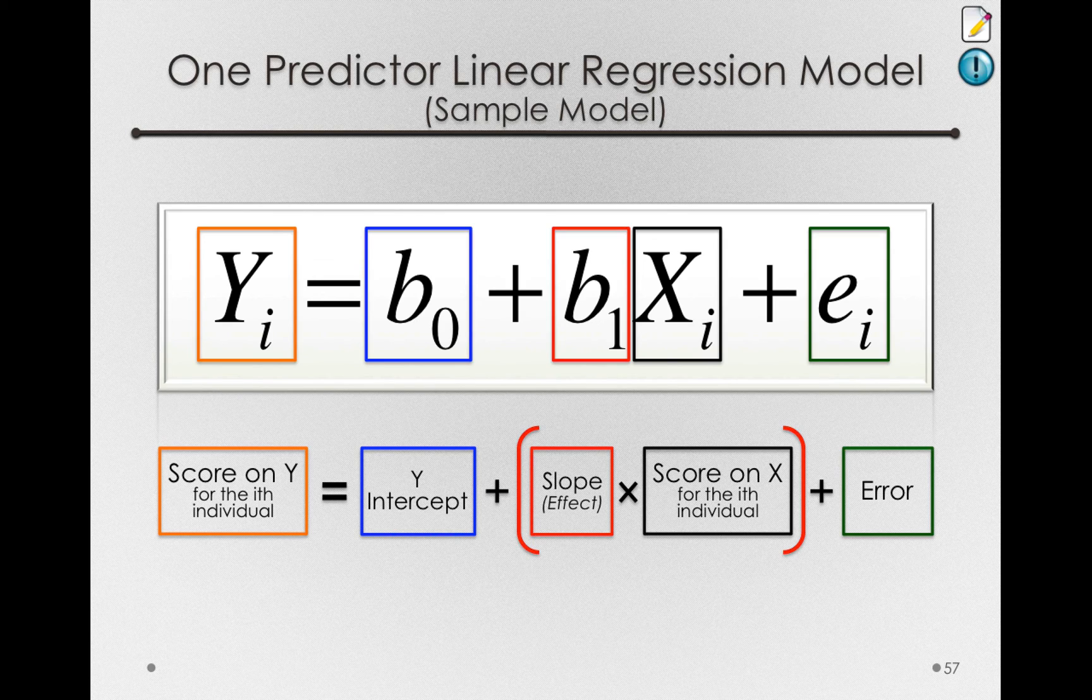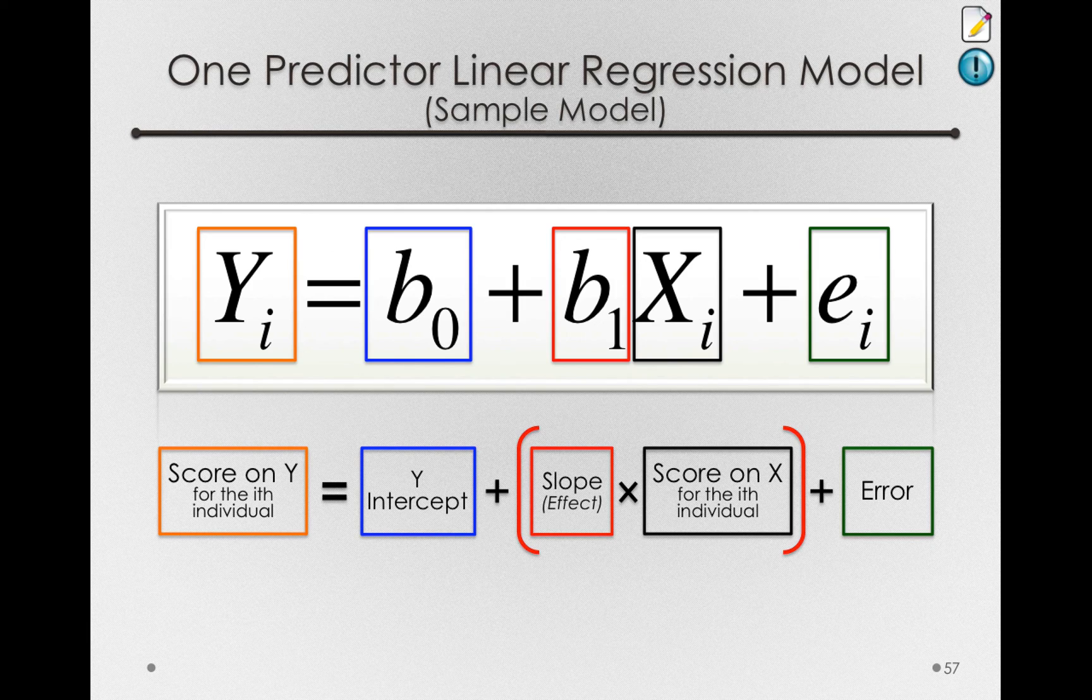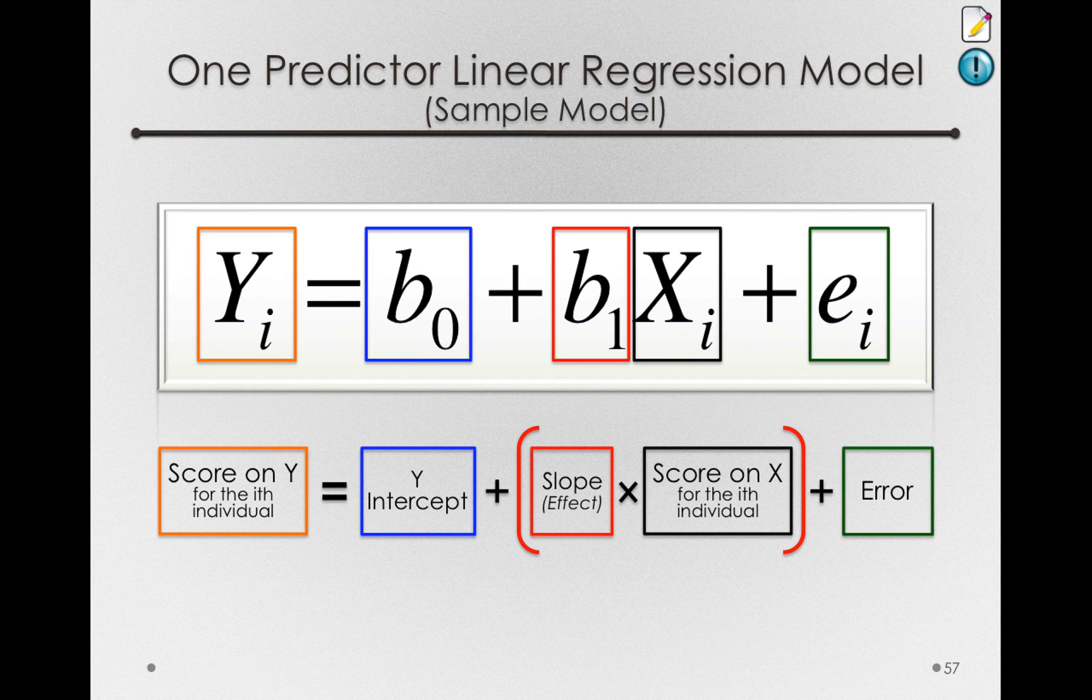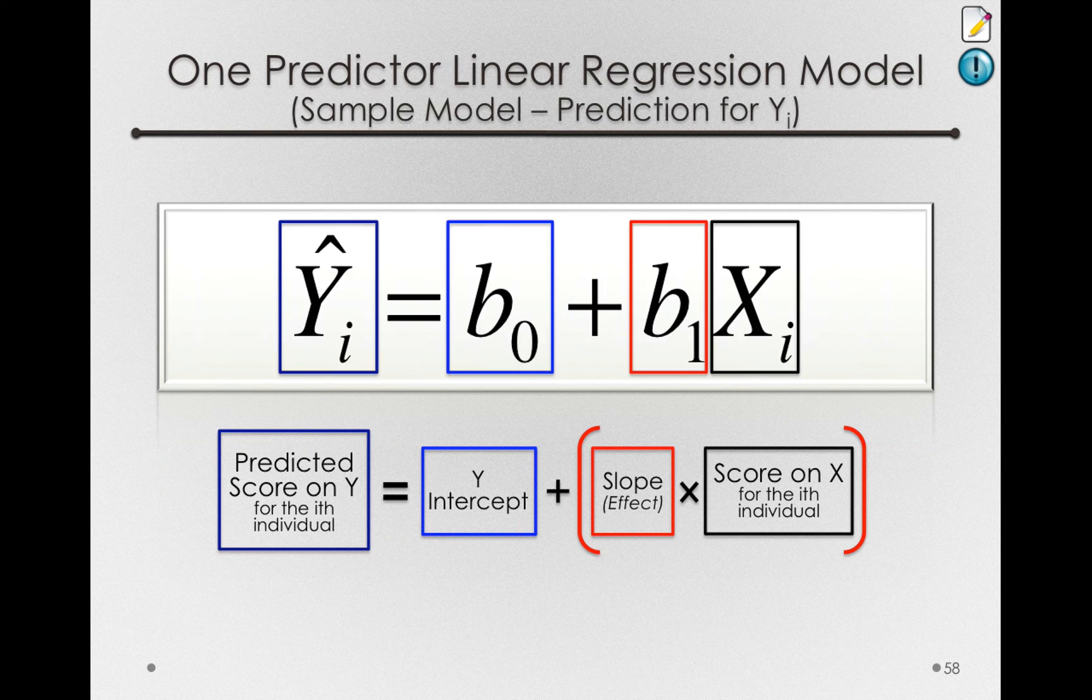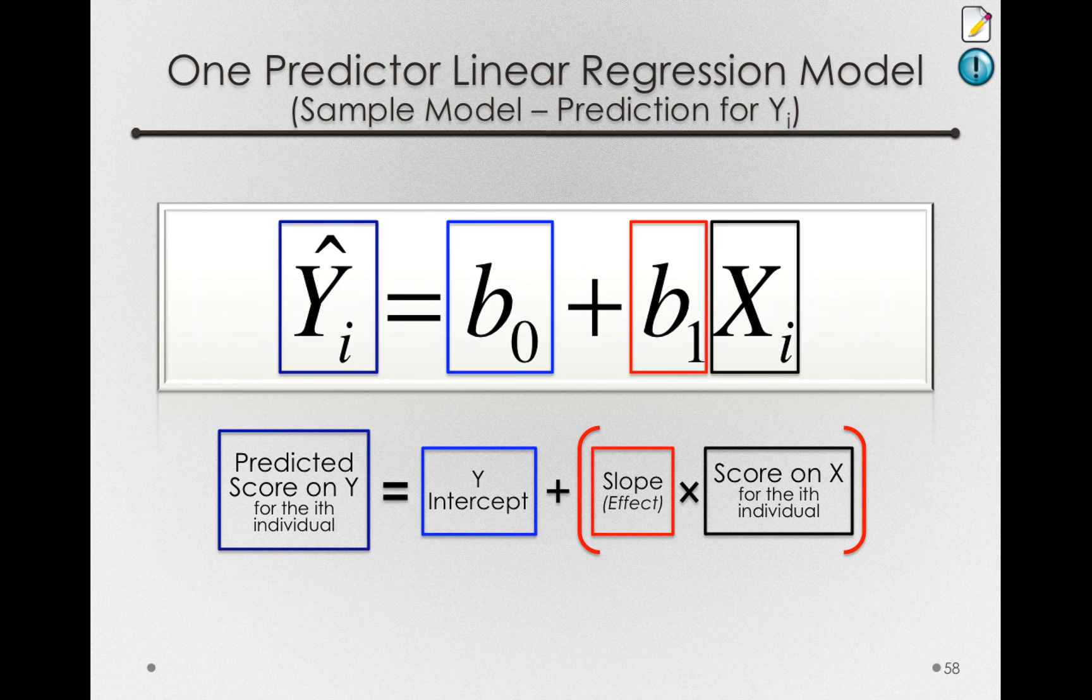This is our one-predictor linear regression model. It just states that the score on y for the i-th individual in our dataset will be equal to some y-intercept plus b sub 1, the slope, or the component that captures the effect, multiplied by how much of x an individual has, then finally plus error, the degree to which an individual differs from this best-fitting line. Let me take away e sub i for a second, and notice that we're left with just the predicted score on y for the i-th individual. In essence, this is just our formula for the line itself.